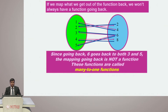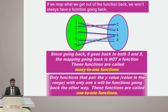However, since 6 goes back to both 3 and 5, the mapping going back is not a function. This is called a many-to-one function. Only a function that pairs each y value in the range with only one x will be a valid function going back the other way. These functions are called one-to-one functions.